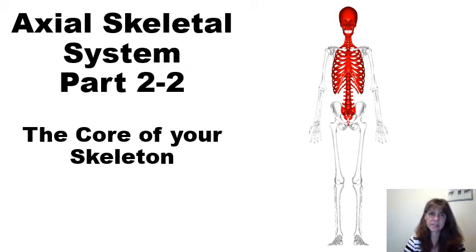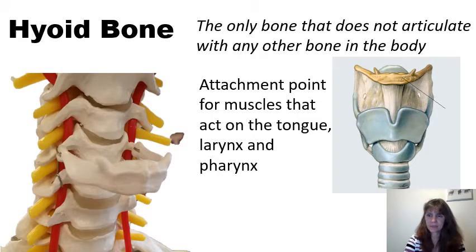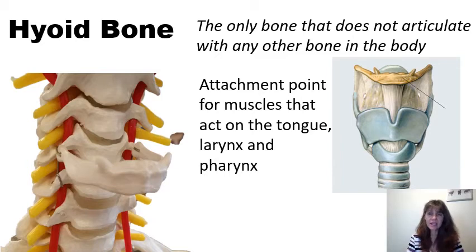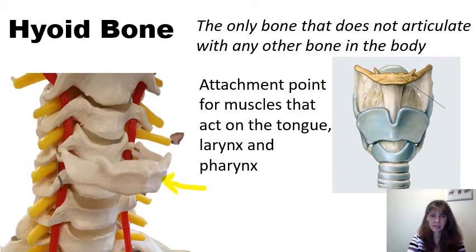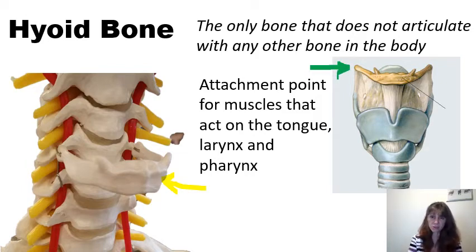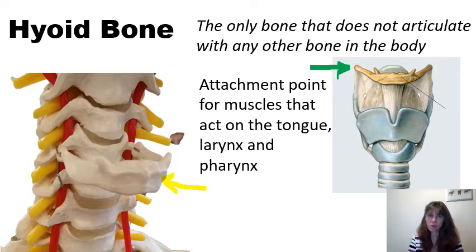This recording is chapter 7, part 2 of 2, the axial skeletal system. There is a bone that acts as an anchor for the tongue, referred to as the hyoid bone. You can see the hyoid bone in pictures here. The hyoid bone does not articulate or form a joint with any other bone in the body. It acts as an attachment point or anchor for muscles that act on the tongue, larynx, and pharynx.